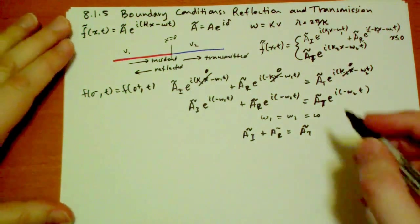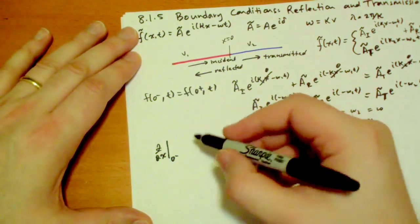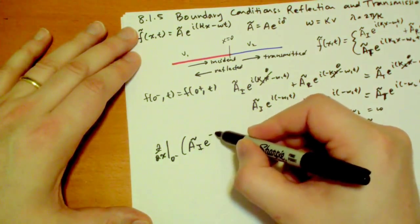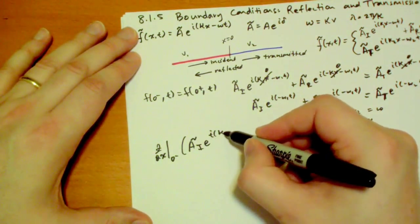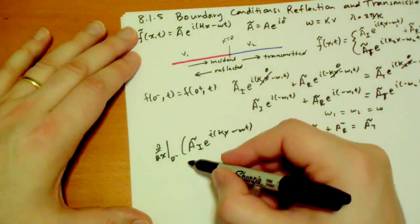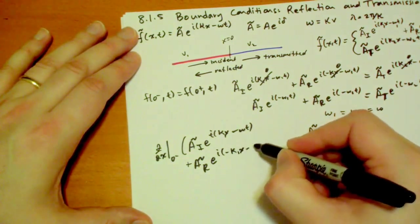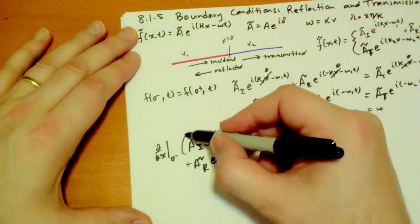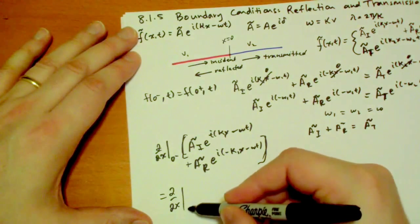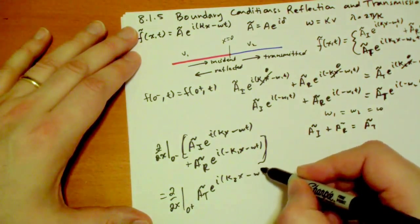So the derivative with respect to x at 0, so d by dx at 0 on the negative side of an incident e to the minus i kappa 1x minus omega t, e to the i minus kappa 1x minus omega t has to equal the derivative with respect to x at 0 on the positive side of the transmitted wave e to the i kappa 2x minus omega t.